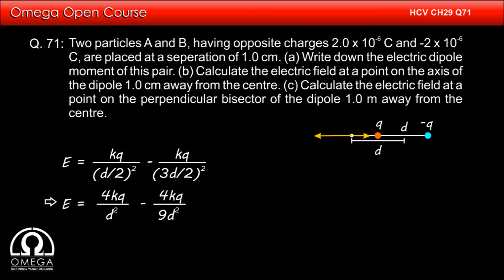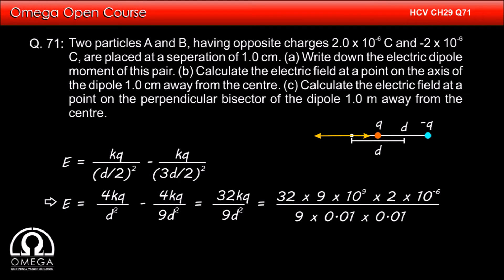Simplifying, we get E = 4kq/d² − 4kq/9d², which equals 32kq/9d². Putting in the values: 32 × 9×10⁹ × 2×10⁻⁶ divided by 9 × (0.01)², which gives E = 6.4×10⁸ V/m.